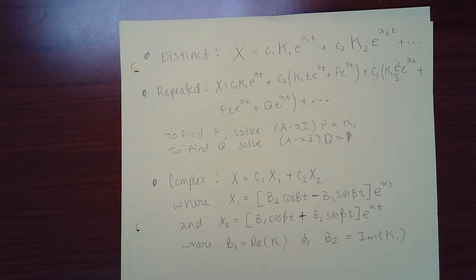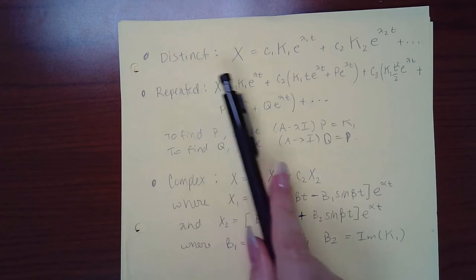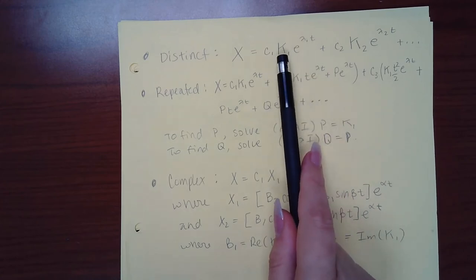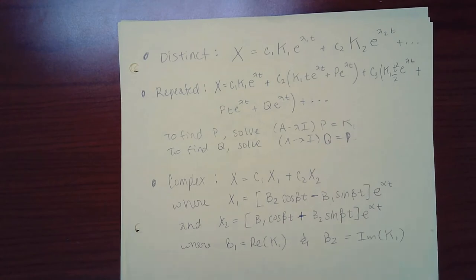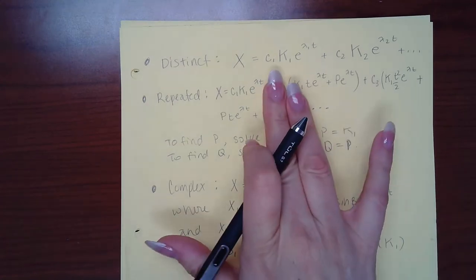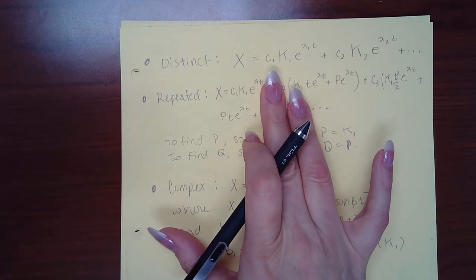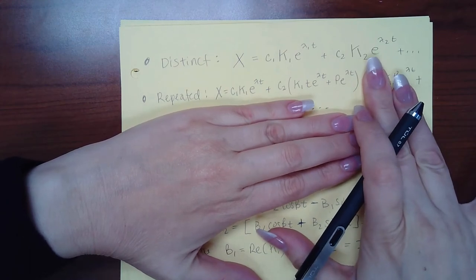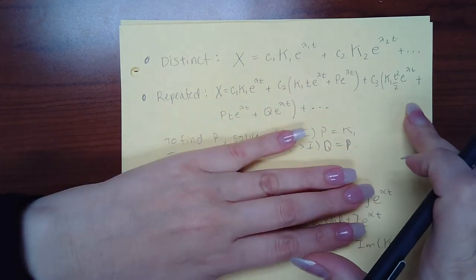This is a summary of the formulas we had before. If we have distinct eigenvalues — distinct lambdas — then we have a term for each one of those lambdas fitting this form: one lambda with its eigenvector, another lambda with its eigenvector, and if there's a third, that lambda with its vector. If you have a repeated eigenvalue, it depends on how many times it repeats. If it appears once, the term looks like the distinct case. If it repeats twice, you'll have two terms. If it repeats three times, you'll have three terms.